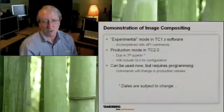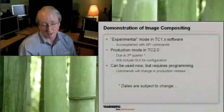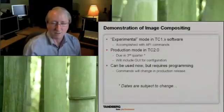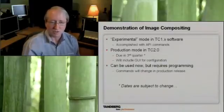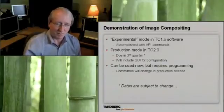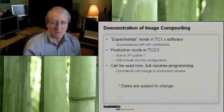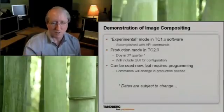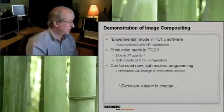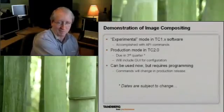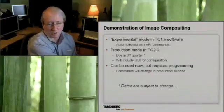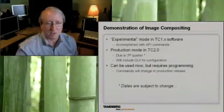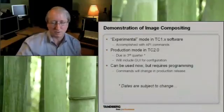What I've been showing you is image compositing, and it exists today in the C90. I'm using production-level software — this is not any type of beta software or hardware. I'm using TC 1.1 software, and it's accomplished with API commands. You've seen me at my PC activating command sets with macros to arrange the windows on screen.